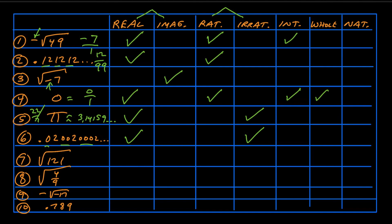For number seven, the square root of 121 — you can simplify that to 11, because 11 times 11 is 121. And 11 can be written as 11 over 1. Anything divided by 1 is itself, so we have an integer divided by an integer — a ratio of two integers, making it rational, not irrational. We know 11 is not the square root of a negative number, so it's real. And 11 is an integer — a round positive number. It's also a whole number and a natural number, one of the counting numbers.